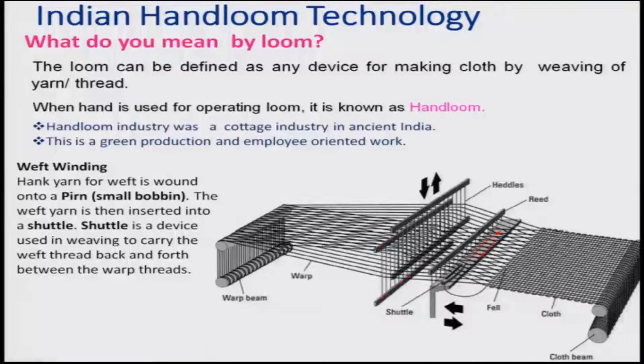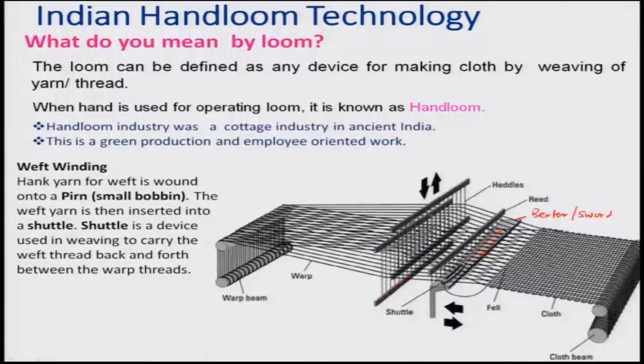This is your reed, and this portion is the beater — also called a sword. The weft moves through with the help of the shuttle, which can move from left to right and from right to left whenever the heddles go down. That way the warp which is on the bottom goes to the top, cloth is being formed, and the cloth is wound onto the cloth beam.